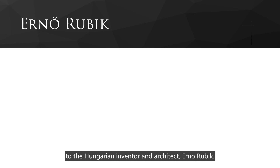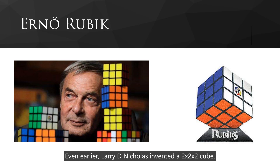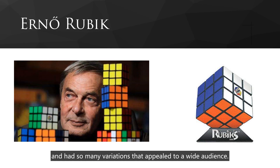The history of the Rubik's cube can be traced back to Hungarian inventor and architect Erno Rubik. Even earlier, Larry D. Nicholas invented the 2x2x2 cube. Both inventors wanted to create a 3D puzzle, and they found this prototype easy to produce with so many variations that appealed to a wide audience.